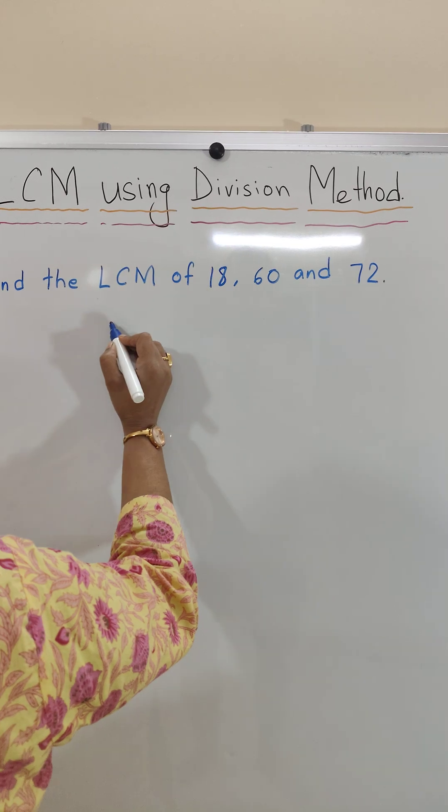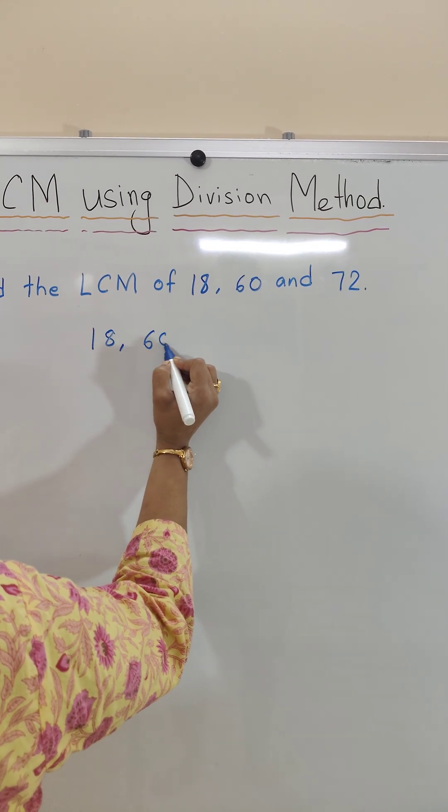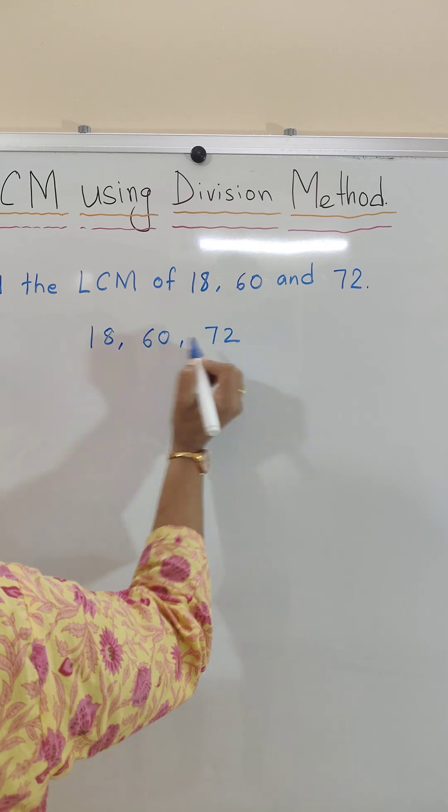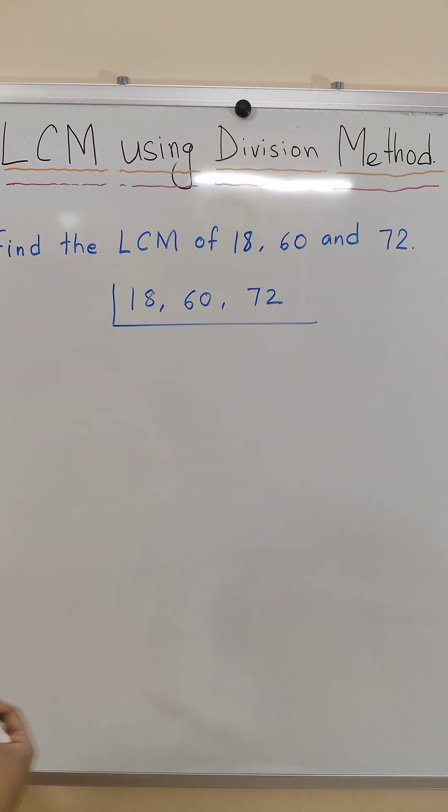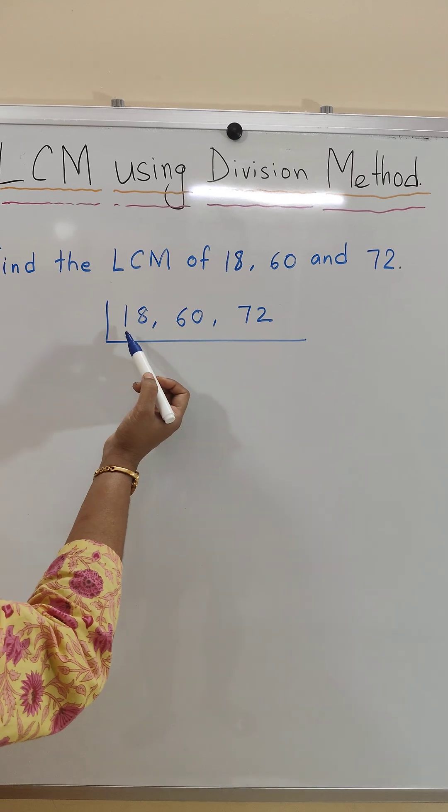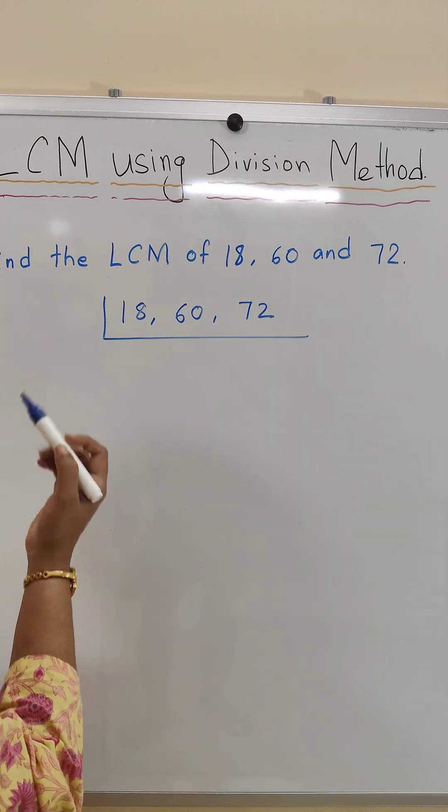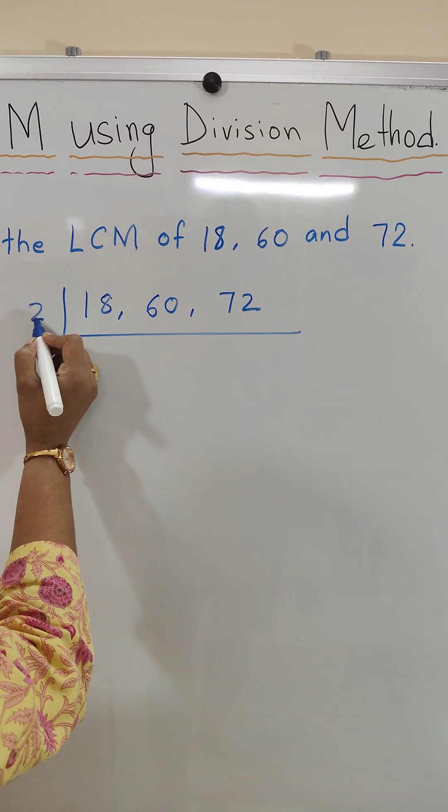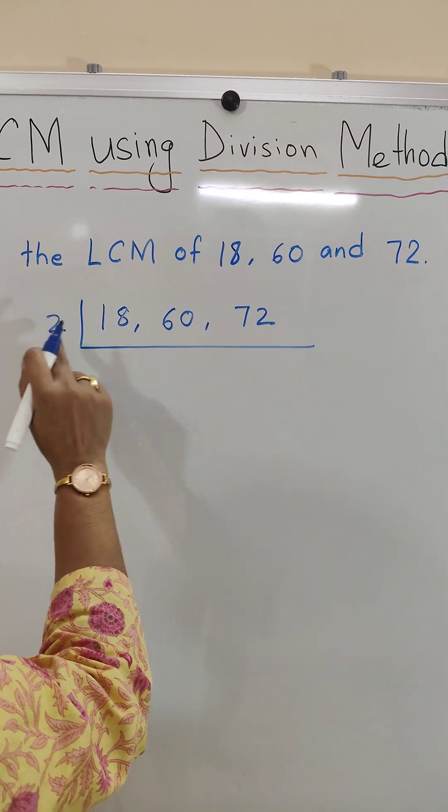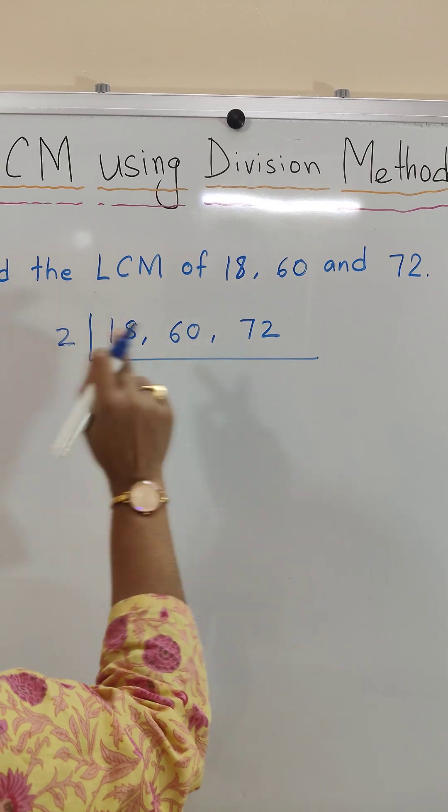First let's write the numbers horizontally and separate them by comma. Now we will find a suitable prime number which exactly divides at least any two numbers. Let's start dividing by 2 because we can divide 18 by 2, 60 by 2 and 72 by 2.